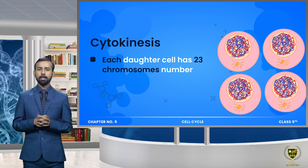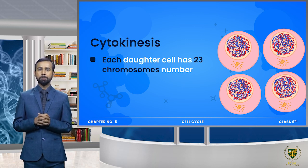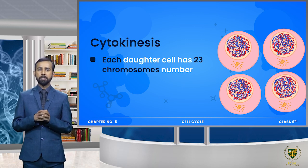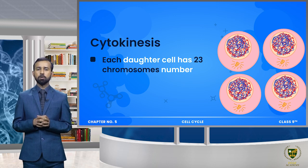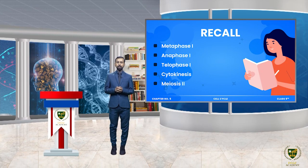Finally meiosis 2 کی cytokinesis کے بعد ہمارے پاس چار cells ہیں اور ہر cell میں chromosome number 23 ہے۔ اس طرح سے humans میں sperm cells یا egg cells produce ہوتے ہیں - جو final cells ہیں ان میں parent cell کی نسبت chromosome number reduce ہو کر half رہ جاتا ہے - اس situation کو ہم کہتے ہیں haploid۔